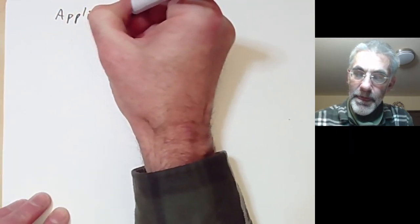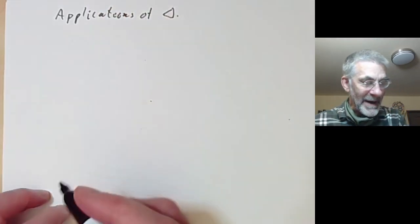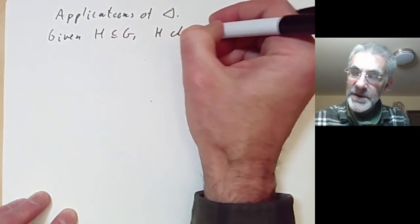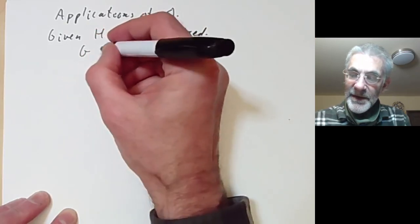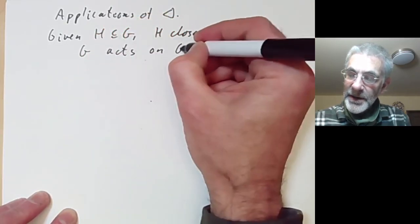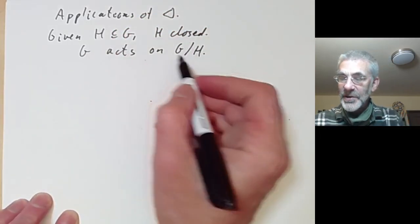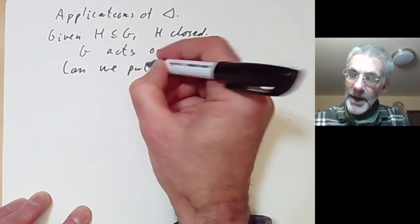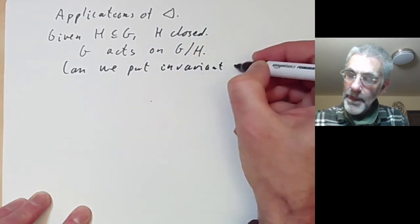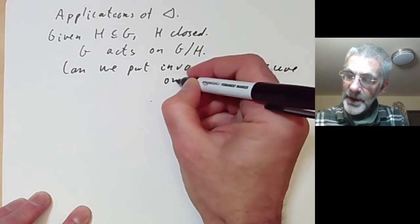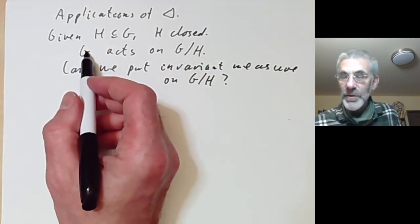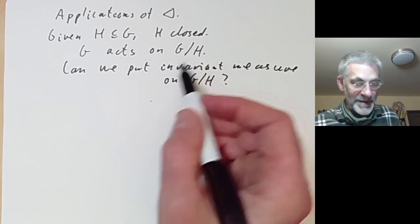Now let's look at some applications of delta. One of the main applications is the following problem: suppose we're given H contained in G with H closed. Then we can think of G acting on G/H — this is a transitive action of G on some space — and we can ask: can we put an invariant measure on G/H? This would obviously be very useful, since we often want to integrate over spaces, and if the space is acted on by a group we'd like to integrate in a way that's invariant under the group.